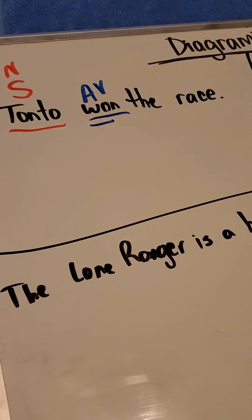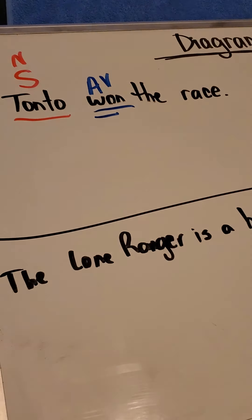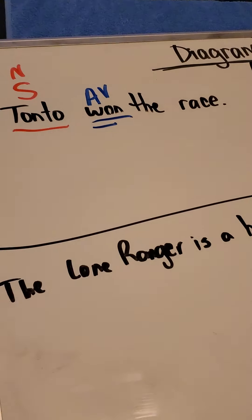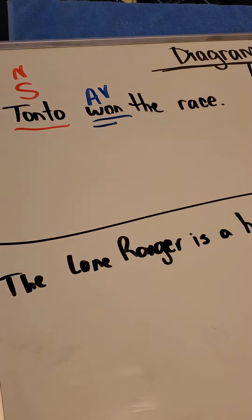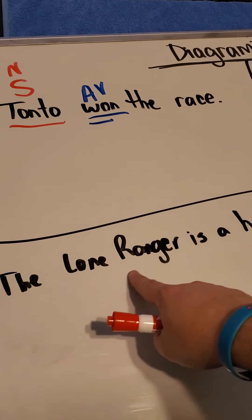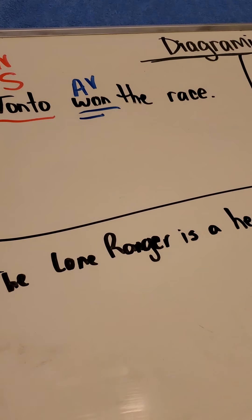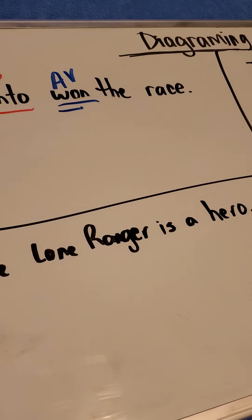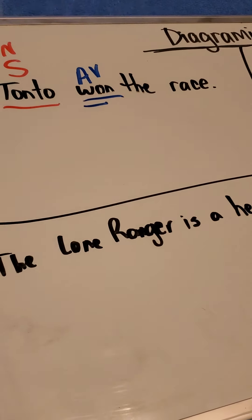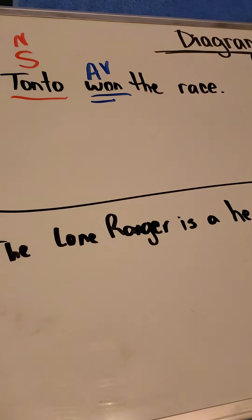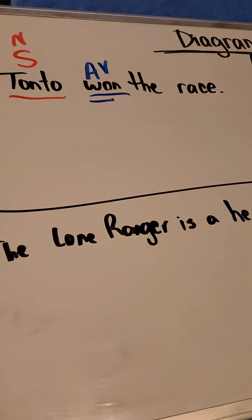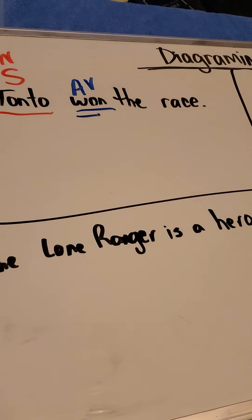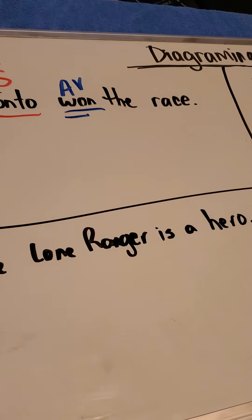Right now you're probably thinking, who in the world is Tonto? Tonto was the sidekick of the Lone Ranger — here you see his name in the next sentence. The Lone Ranger was a superhero cowboy kind of guy before real superheroes happened. Ask your parents. They know.